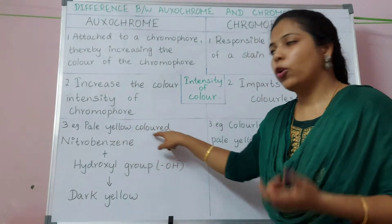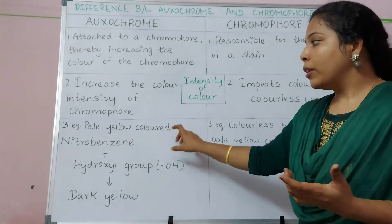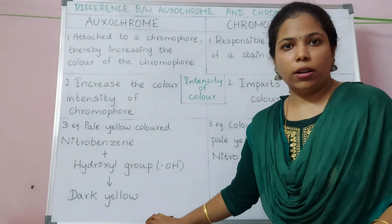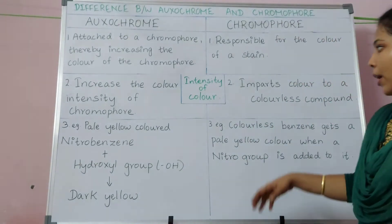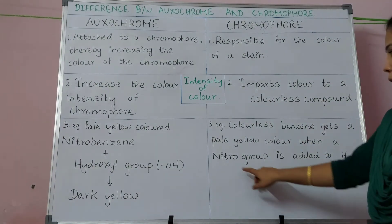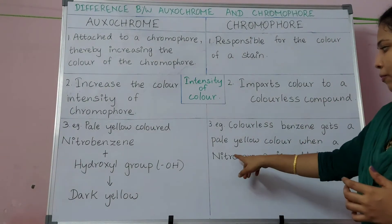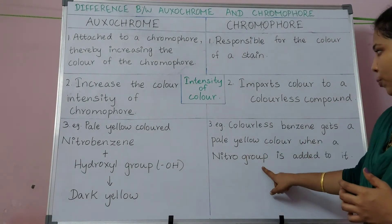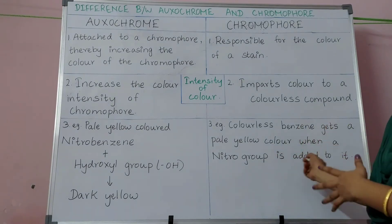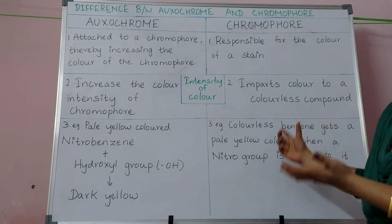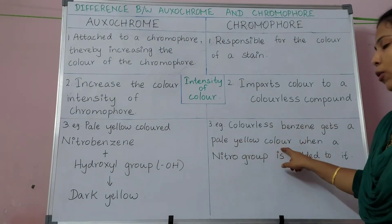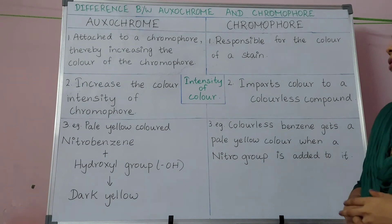this nitrobenzene becomes a dark yellow colored substance. An example for chromophore is the nitro group — when this nitro group is added to a benzene ring, this benzene ring becomes a pale yellow colored substance.